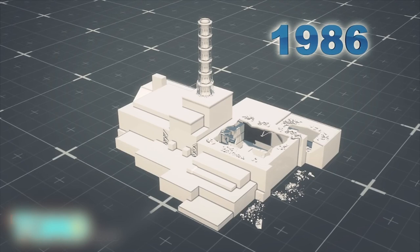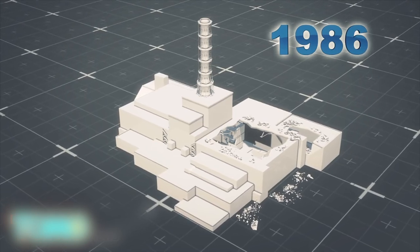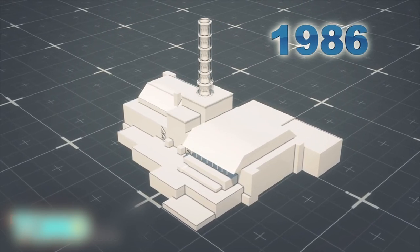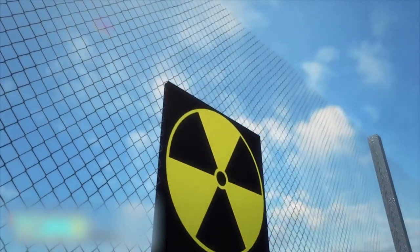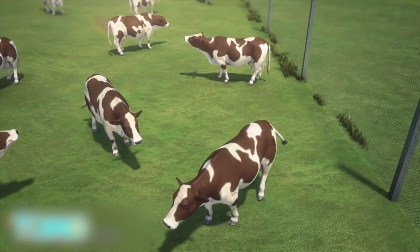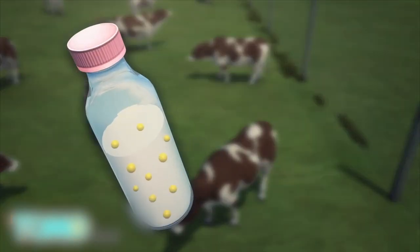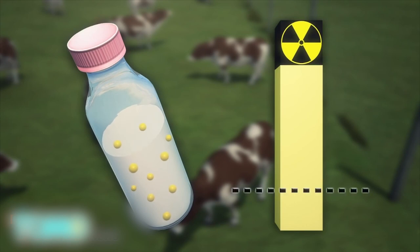Months after the Chernobyl blast in 1986, a concrete sarcophagus was built over reactor 4 to contain the radioactive material inside. Years later, radiation is still present. Recent findings show milk from nearby farms contain a radioactive isotope ten times higher than the allowed limit.